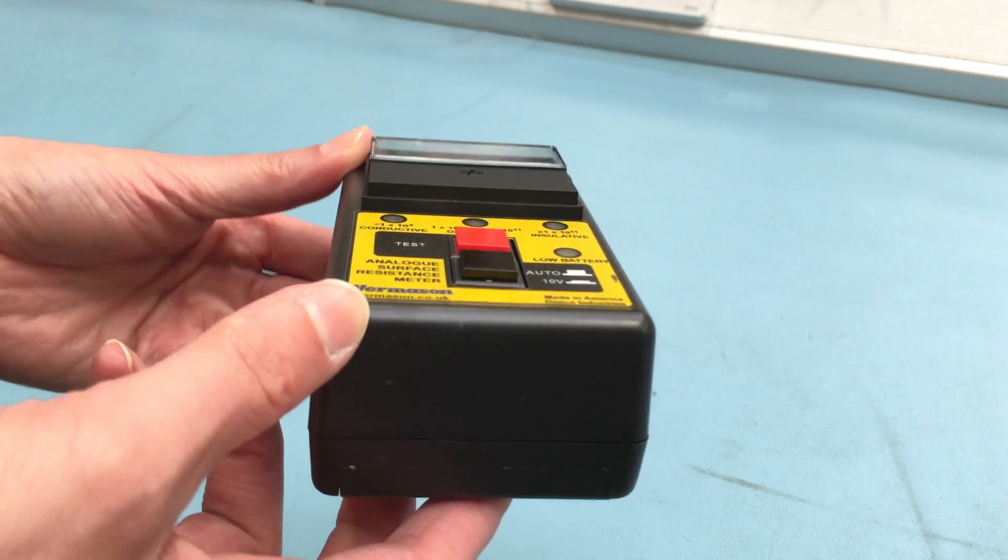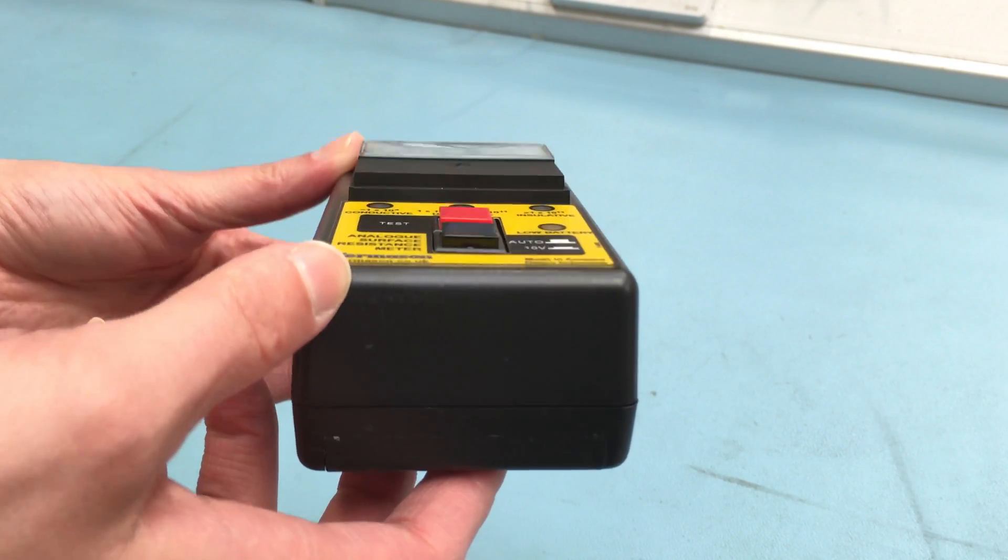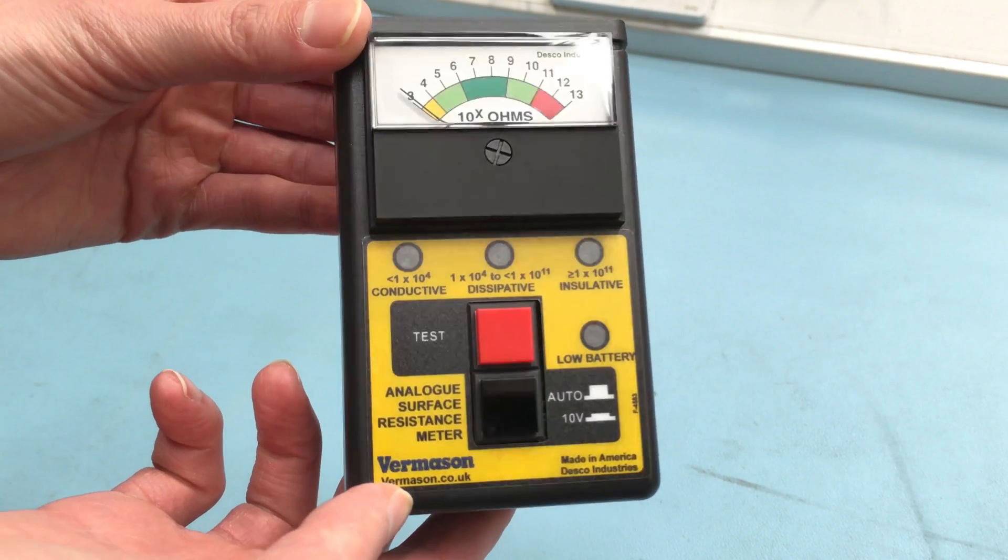Set the test voltage button to auto, then push and hold the test button until the measurement is displayed.